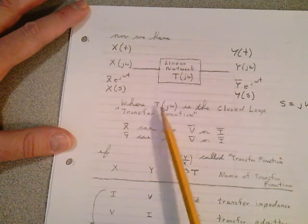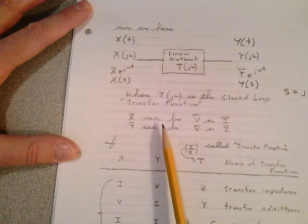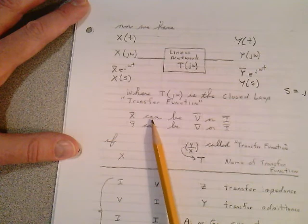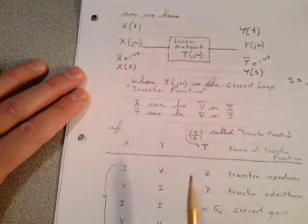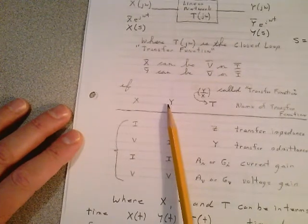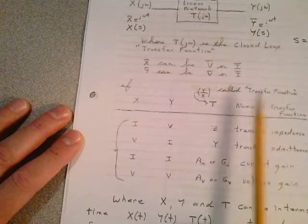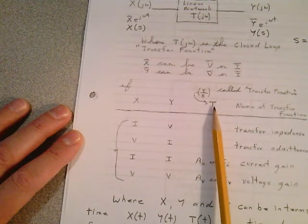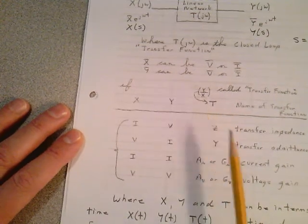Let's go back and look at T in terms of jω as the closed-loop transfer function, where we said x can be voltage or current and the output can be either voltage or current. If you have voltage on the input you don't necessarily get voltage on the output. If we let the input be x and the output be y, we just form the ratio of output over input and we call that the transfer function T.